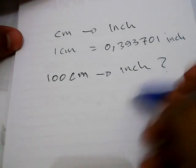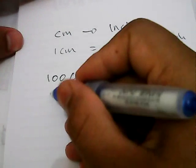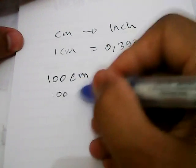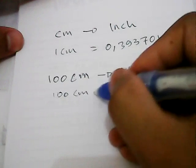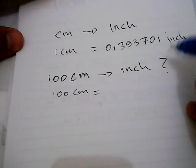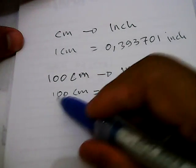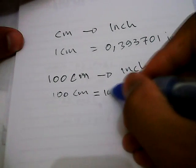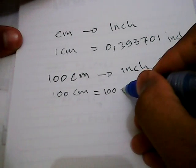The first thing we need to do is write down this number again: 100 centimeters. Then we give it an equal sign and put 100 here too.